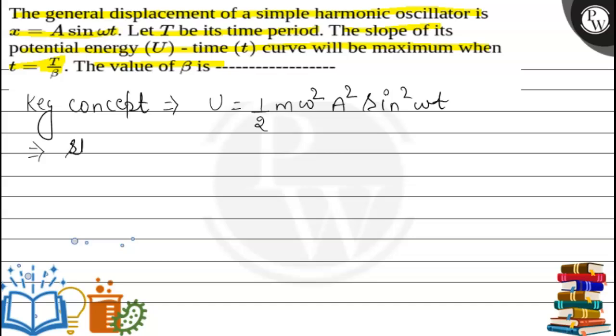The slope of the potential-time curve will be maximum at t equals T by β. Slope is maximum, which means the derivative dU/dt is maximum. Now first we will calculate the change in potential energy with respect to time, then only we differentiate this quantity.